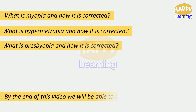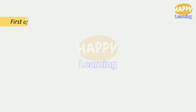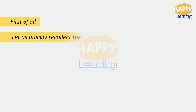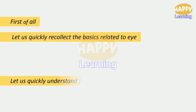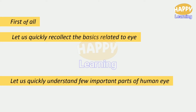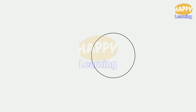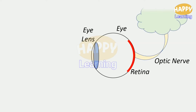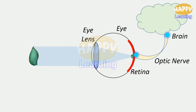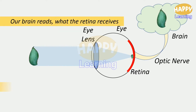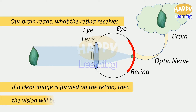By the end of this video, we will be able to answer these questions. First of all, let us quickly recollect the basics related to the eye. This is an eye — it has a lens, retina, optic nerve, and this connects to the brain. There is an object in front of the eye. The rays coming from the object are converged onto the retina by the eye lens, and a clear image is formed on the retina. That image is passed to the brain, which reads a clear picture. Our brain reads what the retina receives. If a clear image is formed on the retina, then the vision will be clear.